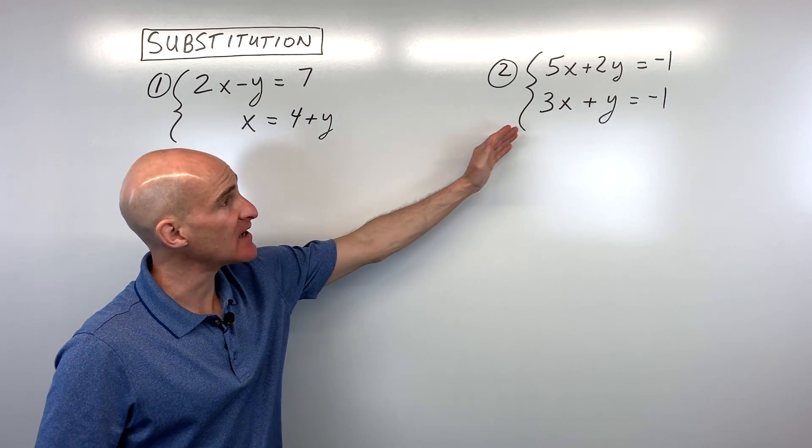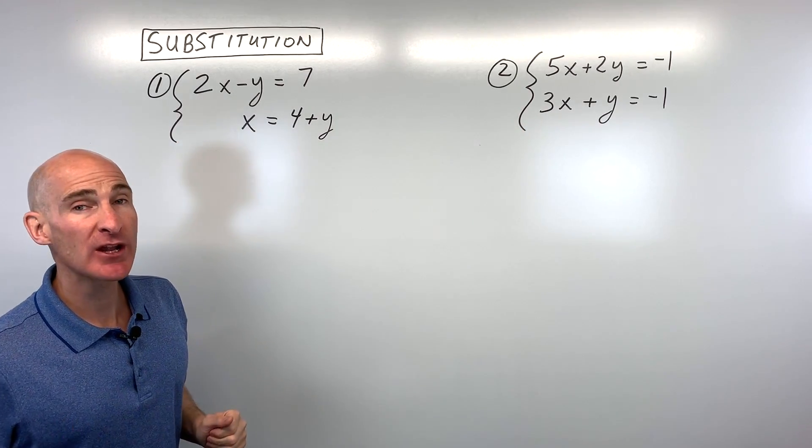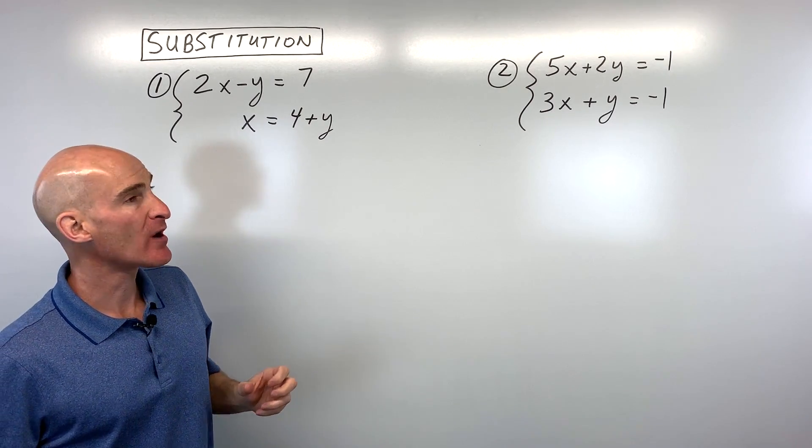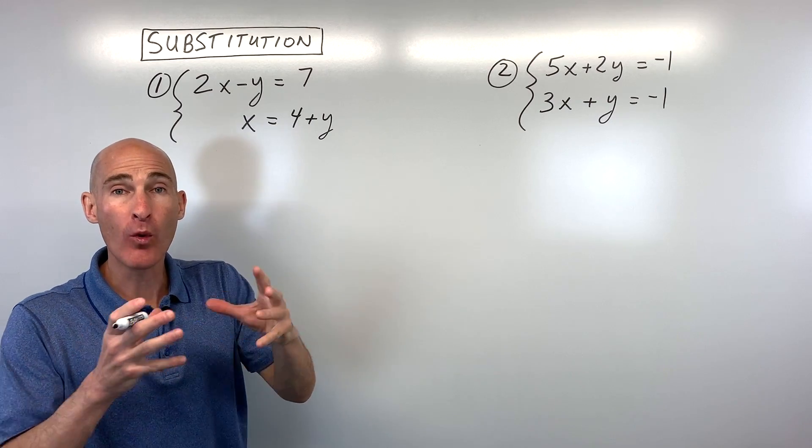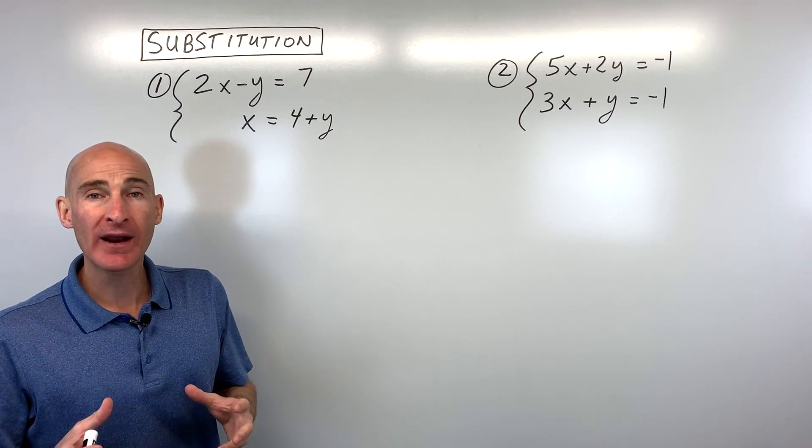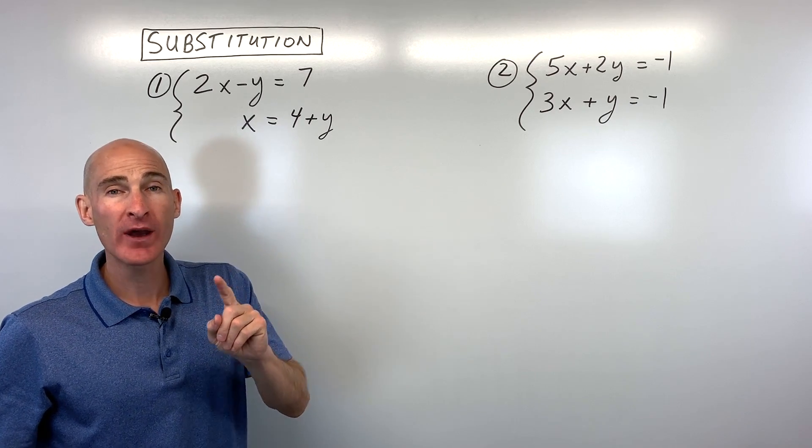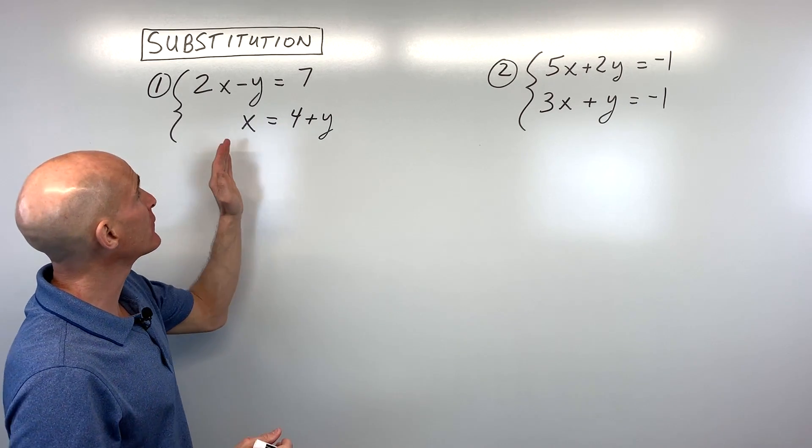We're going to go through two examples. First, you want to look at your variables and solve for one of them - either find what x equals or what y equals. Once you know what that quantity equals, you can put it in the other equation to get one equation with one variable. I'll show you in the first example.